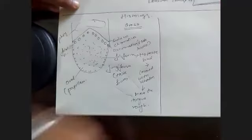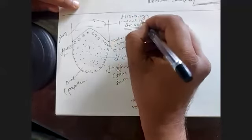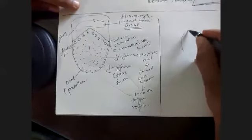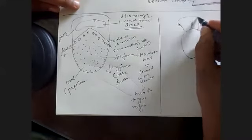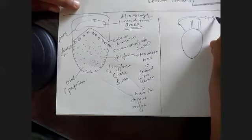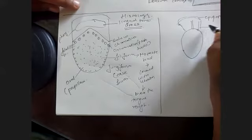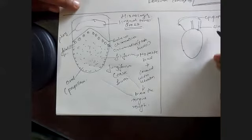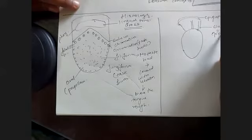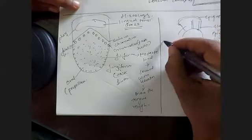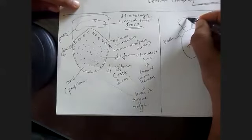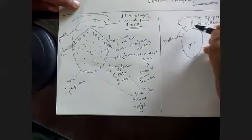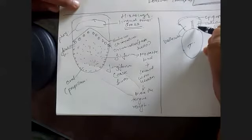On the posterior part of the tongue, which is the pharyngeal part, there is something called the lingual tonsil. The posterior most part of the tongue is connected to the epiglottis by median and lateral glossoepiglottic folds. The space in between is called the vallecula. Looking from the top, this is the tongue, this is the epiglottis, this is the median glossoepiglottic fold, and these are the two lateral glossoepiglottic folds.